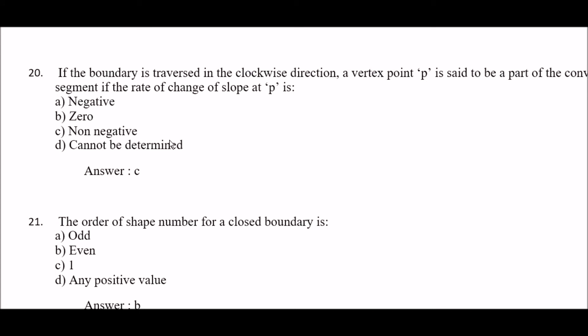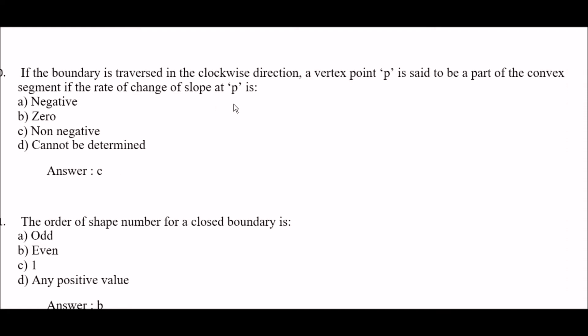Next question: if the boundary is traversed in the clockwise direction, a vertex point P is said to be part of a convex segment if the rate of change of slope at P is — option A: negative, option B: zero, option C: non-negative, option D: cannot be determined. The right answer is option C — non-negative.